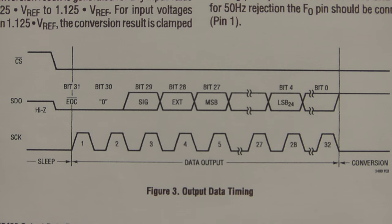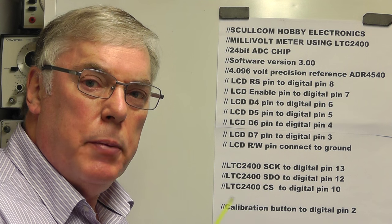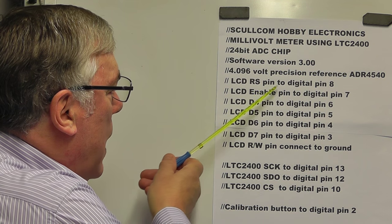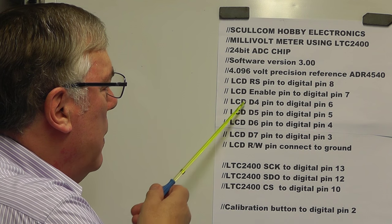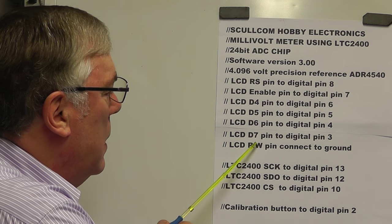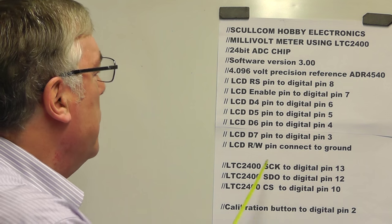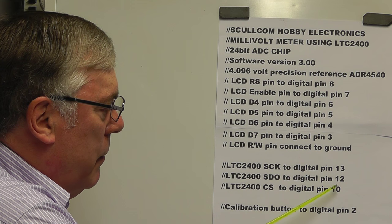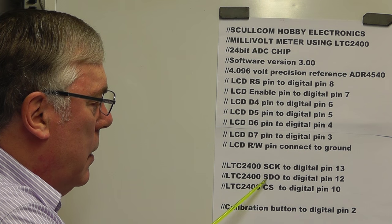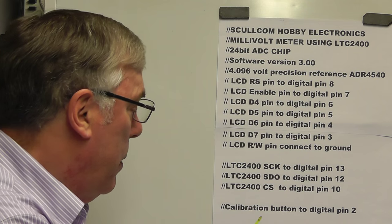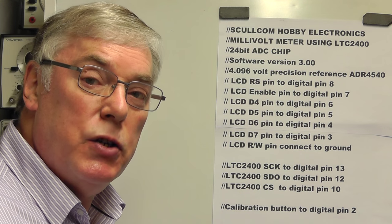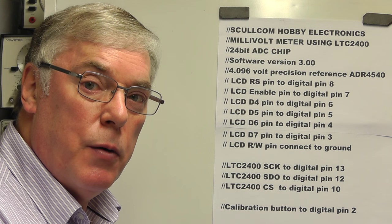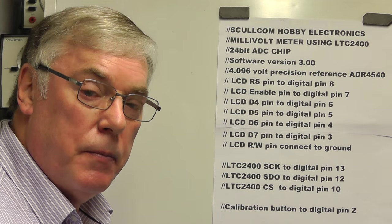Now let's have a look at the actual software. Here we have the first few lines — just a bit of housekeeping with comments indicating which pins I'm using for the liquid crystal display: the RS pin, the enable pin, and the four data pins. The read/write pin on the LCD is permanently grounded. For the LTC2400 I'm using pins 13, 12, and 10 for the clock, data, and chip select pins, and the calibration button is on data pin 2.